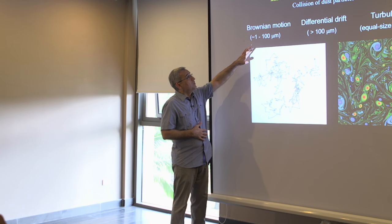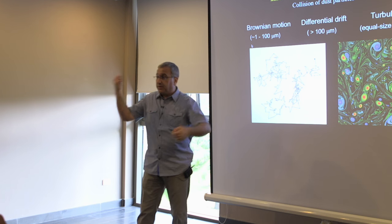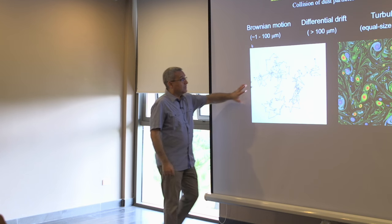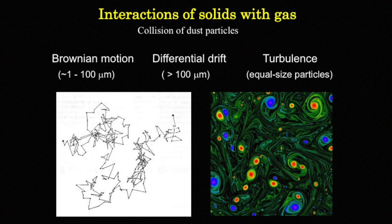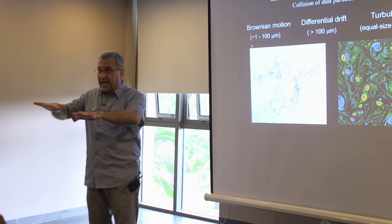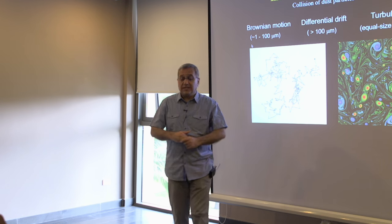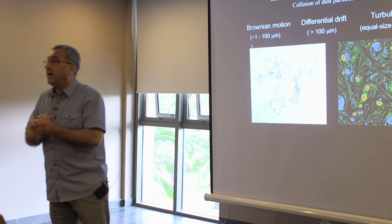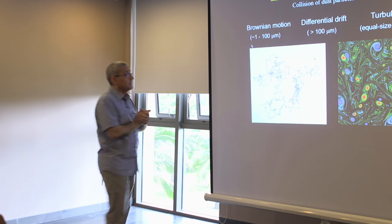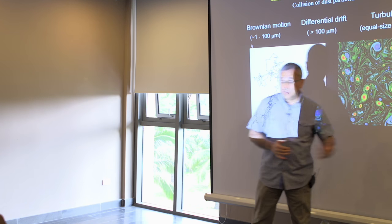Dust particles of 1 to 100 micrometers basically move in Brownian motion — they randomly jump here and there. For those that are 100 micrometers or larger, there is differential drift, meaning their motion becomes more pronounced compared to the gas. They differentiate themselves from the motion of the gas. Equal-size particles get heavily disturbed and perturbed by turbulence. Turbulence is something that can prevent planet formation and in some cases may even help.